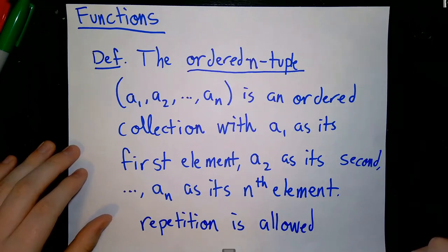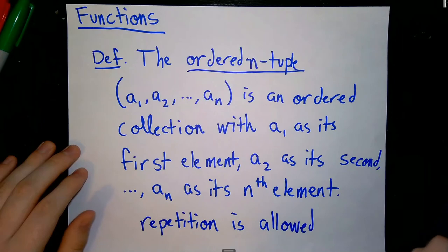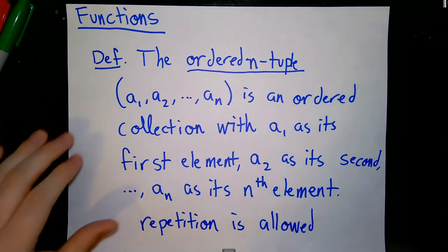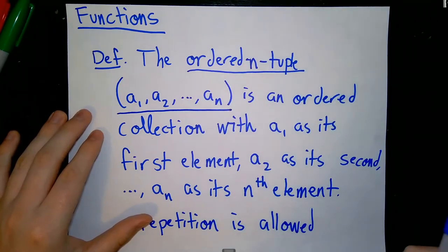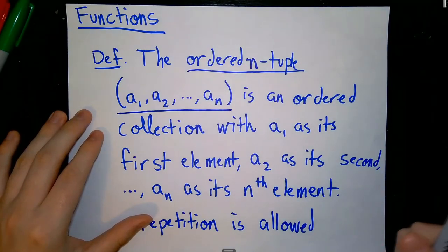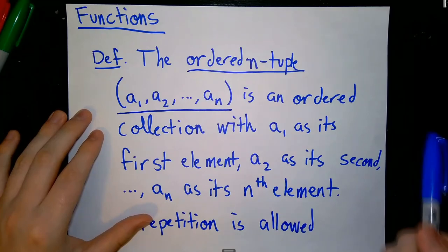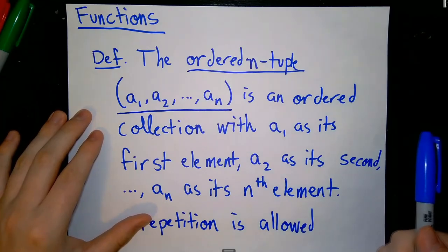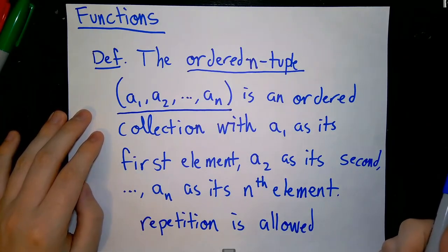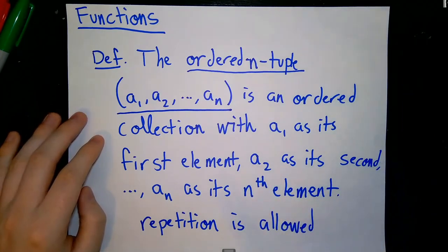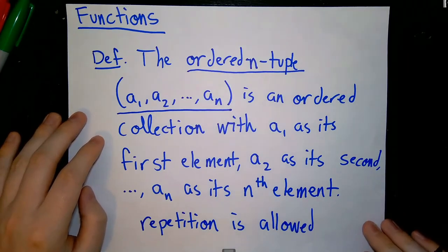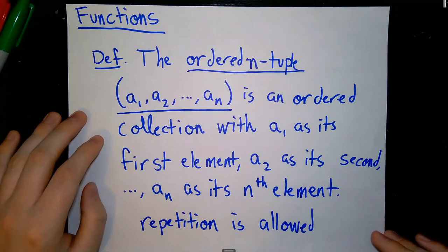An ordered n-tuple is still a discrete object, much in the same way that a set is a discrete object, because its size is a natural number. You can have an empty n-tuple, a 1-tuple, a 2-tuple, all the way up through some n-tuple, and that n will always be a natural number. Between any 5-tuple and a 6-tuple there is always a space of 1, so we have a bunch of discrete structures here.